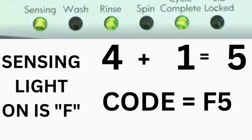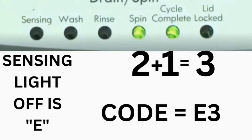Then, on the other flash of lights, the sensing light is off, but the spin and the cycle complete lights are on. Adding them together makes 3. The second part of the code would be E3.